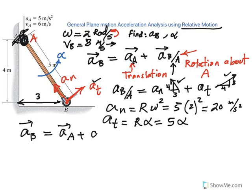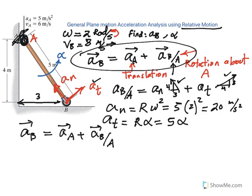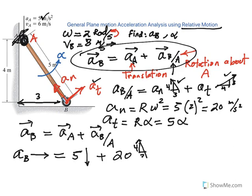Rewriting the equation: acceleration of B equals acceleration of A plus acceleration of B relative to A. Acceleration of B is horizontal (unknown magnitude, assumed rightward). Acceleration of A is 5 meters per second squared downward. The relative acceleration has a normal component of 20 m/s² at slope 4/3, and a tangential component of 5·alpha at slope 3/4. We have two unknowns — acceleration of B and alpha — solved by equating horizontal and vertical components.